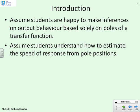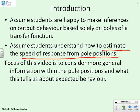We're going to assume that students understand how to estimate the speed of response from the pole positions. This video is going to look at more general information within the pole positions and tell us about the expected behaviour. So not just how fast does the system respond, but what sort of response do we have? Is it oscillatory or not oscillatory? Does it converge smoothly or not?